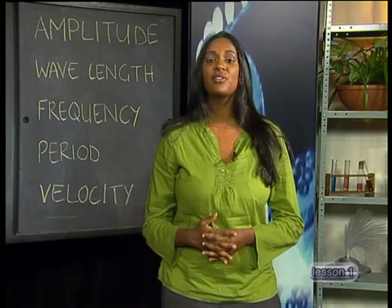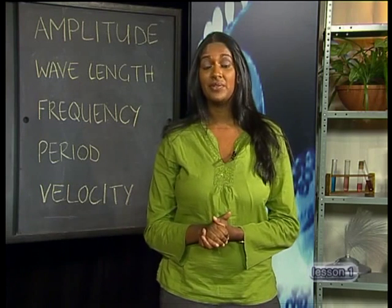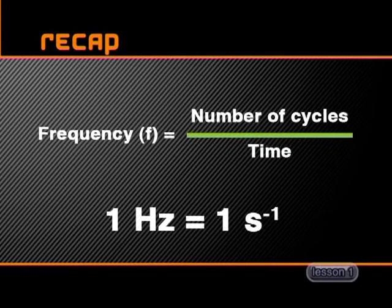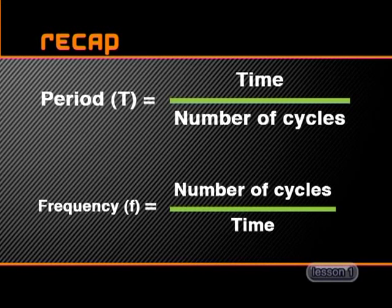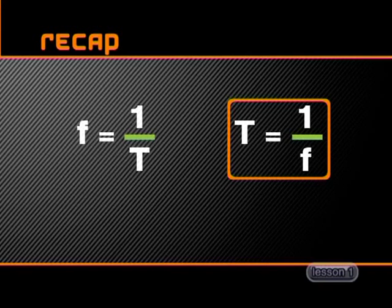A pulse lasts for one period, but a wave consists of a series of pulses. So when dealing with waves, we need to measure the number of cycles or pulses produced in one second. The number of cycles per second is called the frequency of a wave and is measured in hertz. By looking at the equations for period and frequency, you should be able to see that frequency is the reciprocal of period. In other words, we can write either F equals 1 over T, or T equals 1 over F.